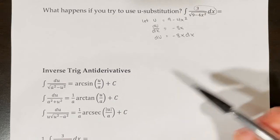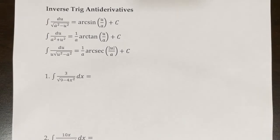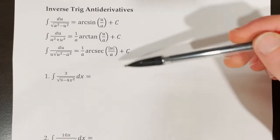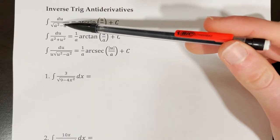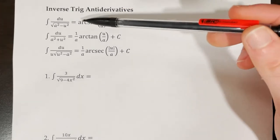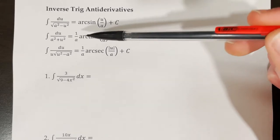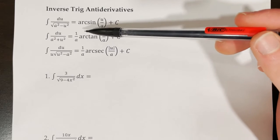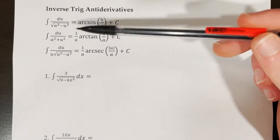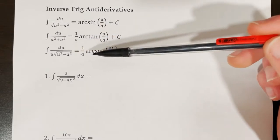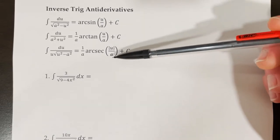This is where inverse trig antiderivatives come in. There are three rules to memorize: (1) ∫du / √(a² − u²) = arcsin(u/a) + C; (2) ∫du / (a² + u²) = (1/a) arctan(u/a) + C; (3) ∫du / (u√(u² − a²)) = (1/a) arcsec(|u/a|) + C.